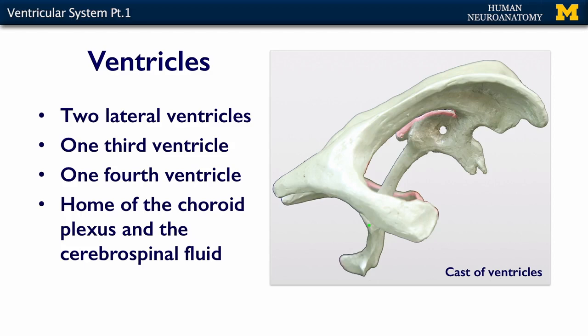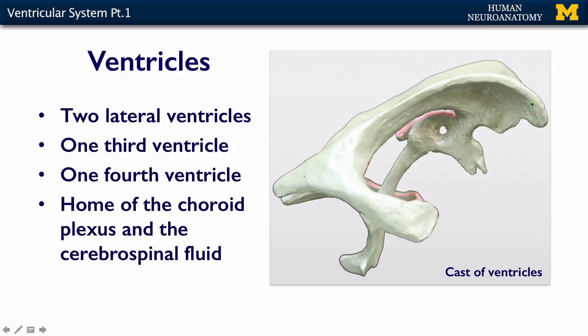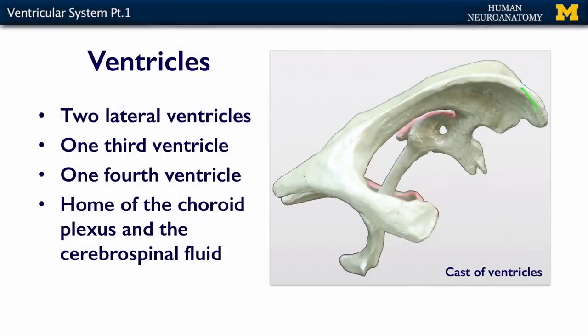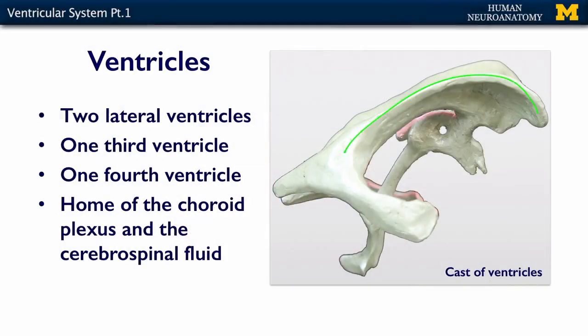In this image, we can see a cast. We've put a resin into the ventricular system and then peeled the brain away, so that what is a space shows up as something positive. The lateral ventricle is here on one side, and you can see that it has three horns.